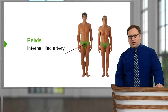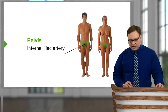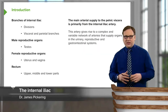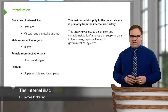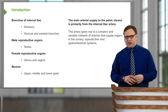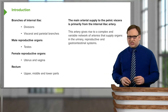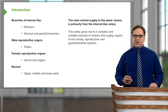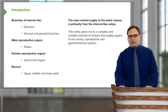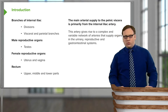In this lecture, we're going to look at the branches of the internal iliac artery — the branches that come off this internal iliac artery, which is itself a branch from the common iliac. We'll look at some of the divisions, the anterior and posterior divisions, and we'll look at the visceral and parietal branches that supply the organs within the pelvis and also the body wall.